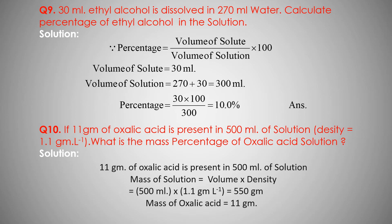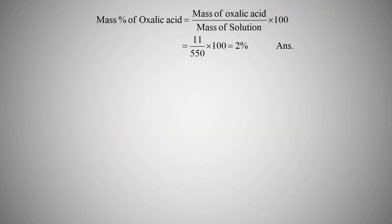Mass of solute — oxalic acid — is 11 gram. Mass percentage of oxalic acid equals mass of oxalic acid upon mass of solution into 100. That is 11 upon 550 into 100, which equals 2%. So mass percentage of oxalic acid is 2%.